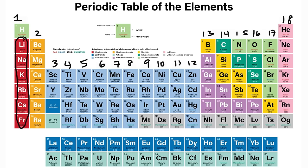Hydrogen is not considered to be an alkali metal. The alkali metals are very reactive — all of these metals react violently with water, and some of them blow up with water. Their reactivity increases as you go down a group, which means that cesium is much more reactive than sodium.